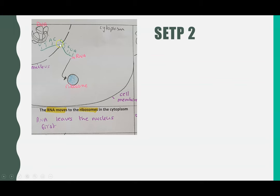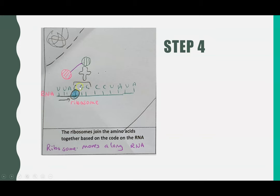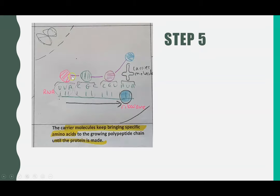That RNA copy comes out of the nucleus through tiny gaps and attaches onto a ribosome. When it is on the ribosome, the special carrier molecule can bring specific amino acids, bringing one particular amino acid for each triplet of bases. We can see the carrier molecule carrying an amino acid to that first triplet of bases. This continues along the RNA chain, and each time a new amino acid is brought, the amino acids are bonded together. The ribosome moves along the RNA so the carrier molecule can keep bringing new amino acids until we reach the very end and add on the final amino acid.